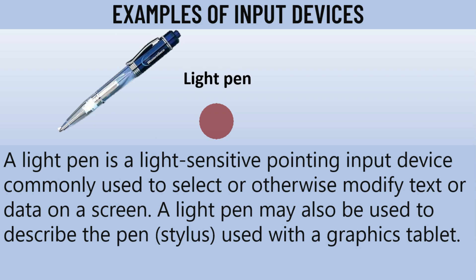The next example is the light pen, which looks like the normal pen used to write on paper. It is a light-sensitive pointing tool and input device commonly used to select or modify text or data on a screen. A light pen may also describe the stylus used with a graphics tablet. Tablet devices and other mobile devices use the light pen to select objects on the screen, write, type, and select text and data. Therefore the light pen is an input device used to perform specific functions in the computing environment.